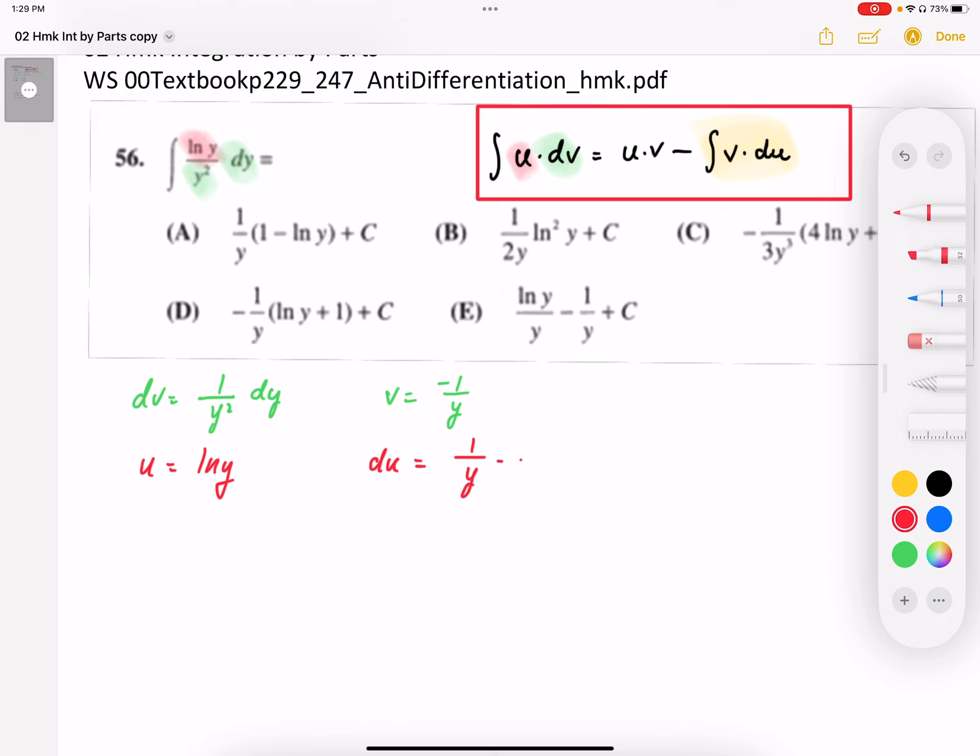Starting with our original integral, which we could not work out, log y over y squared dy, I've got a new expression. That new expression is going to be negative log y over y. Okay, this is my uv.